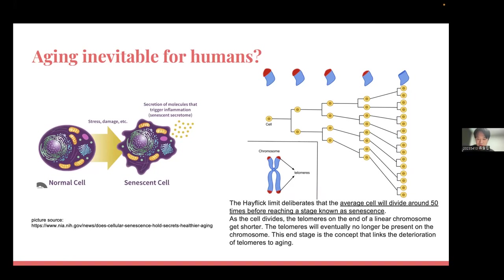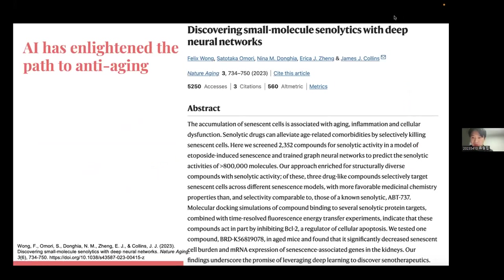So the question is: is aging inevitable for humans? This is the first step to make some kind of medicine or surgery for anti-aging or reverse aging. Why are we aging? Because there's a normal cell, but we get stress, damage, etc., and in the end it becomes a senescent cell that triggers inflammation. It transforms into some kind of weird state.